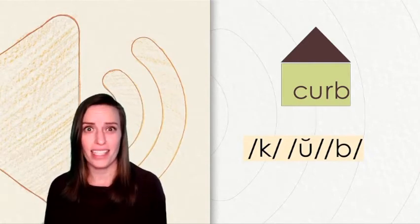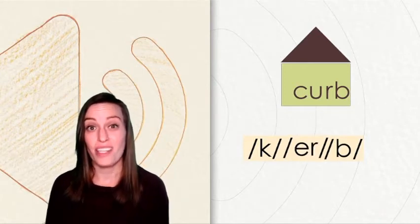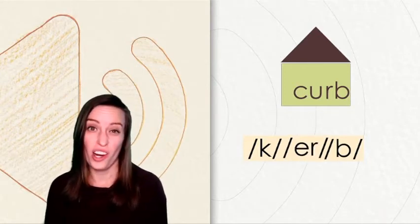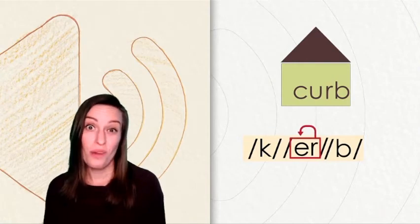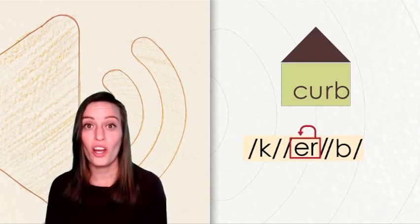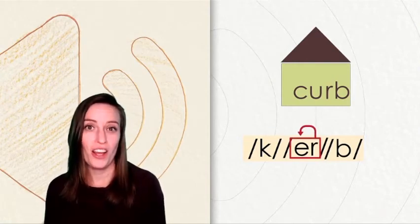It's the letter R. If we add that R after the vowel U, what happens to the vowel? The R is bossy. It changes the sound uh to er. So now the word says k-er-r-b, curb.